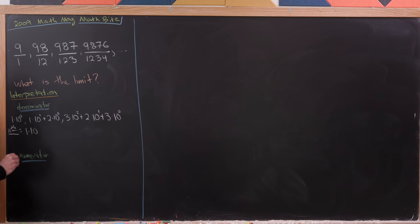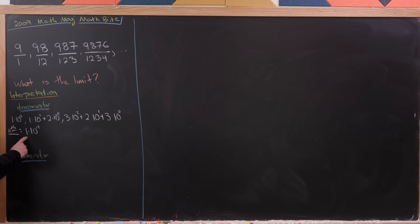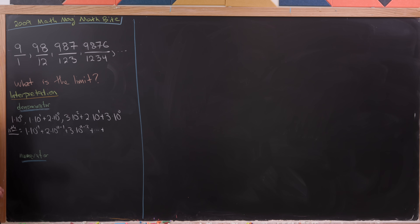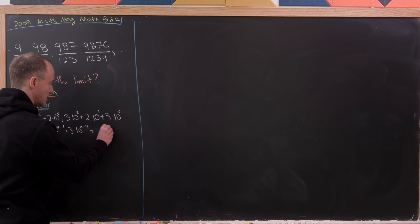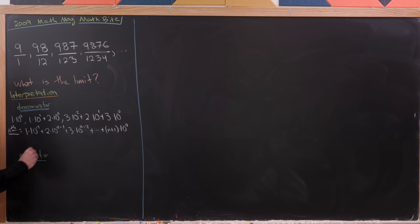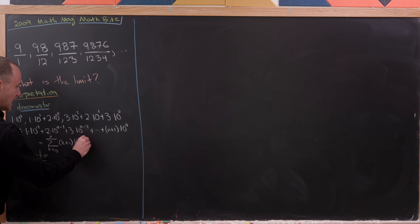The nth term looks something like this — we'll have 1 times 10 to the n. We'll index so that this is the zeroth, first, second, third term, making it easier to index. So we've got 1 times 10 to the n plus 2 times 10 to the n minus 1 plus 3 times 10 to the n minus 2, all the way down, ending with n plus 1 times 10 to the 0. We can push all of these into the sum as k goes from 0 up to n of k plus 1 times 10 to the n minus k.